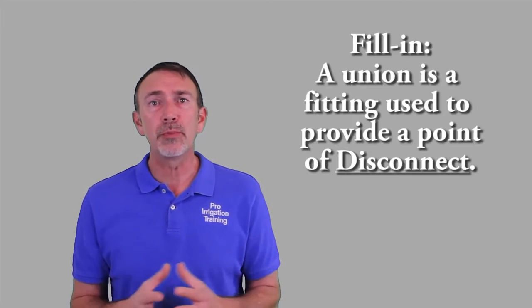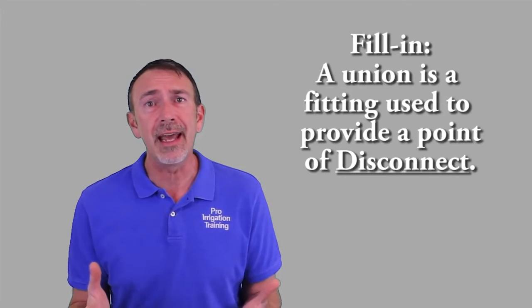In this lesson, we're going to talk about the union, and this is just one of the many parts that are available out there that one can use to assemble an irrigation system or to effect a repair, but this union is best used as a point of disconnect.